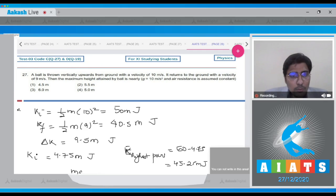Now, this will be equal to the potential energy. So mgh will be equal to 45.25, and hence h will be equal to 45.25 divided by m into g. So this will be, m is up here, so m into g. So this will be equal to 4.525 meters.